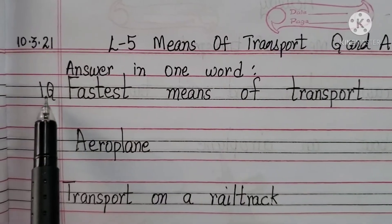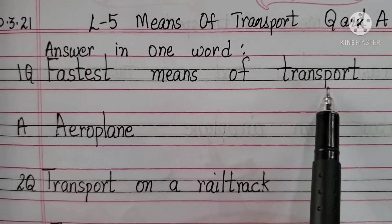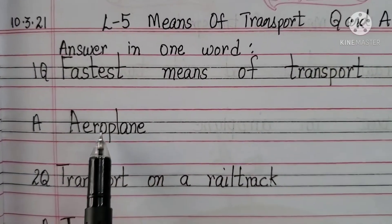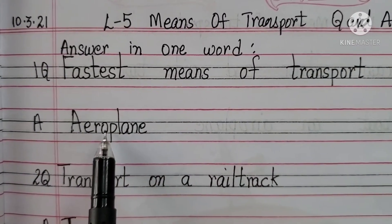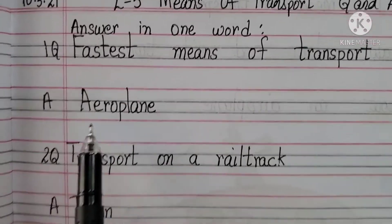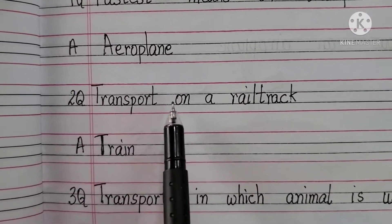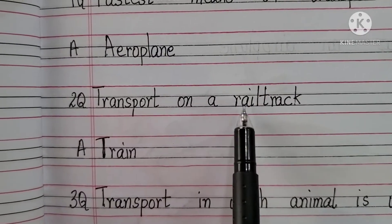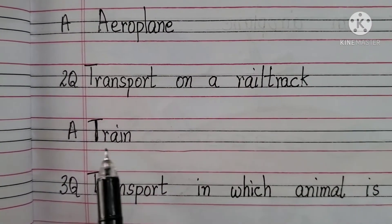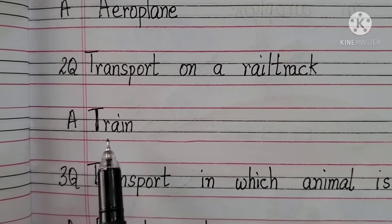First question: What is the fastest means of transport? The answer is aeroplane. Second one: Transport on a rail track. The answer is train.